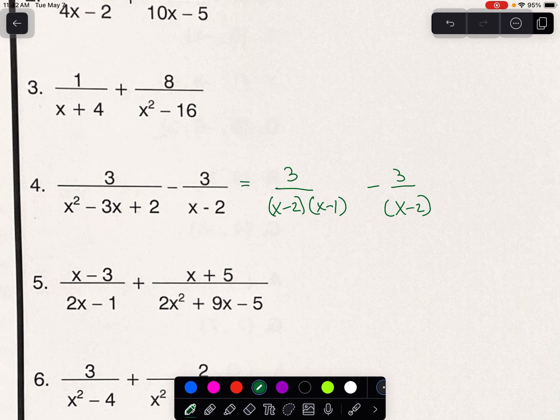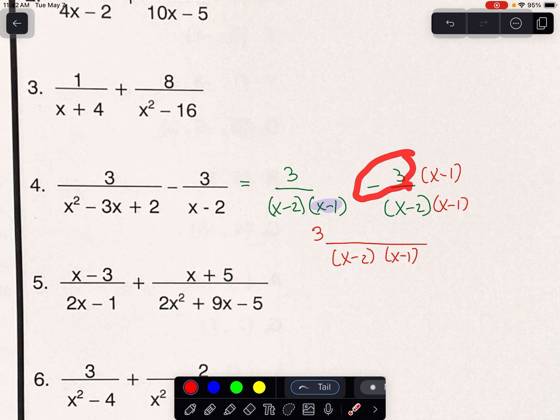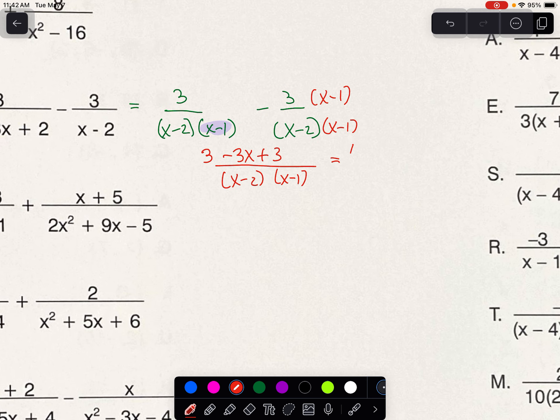You'll notice that we are missing this x minus 1 factor on the second fraction, so we're going to multiply top and bottom by x minus 1. Now our denominator will be that x minus 2, x minus 1. Just leave it. Don't try to multiply that. It's usually just essential to multiply on the top. We would have a 3 for the first one. Be careful, this negative is going to distribute. So we get negative 3x plus 3, which is 6 minus 3x over x minus 2, x minus 1.